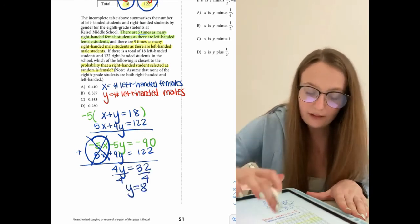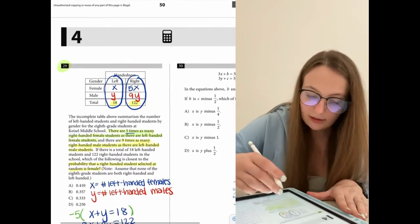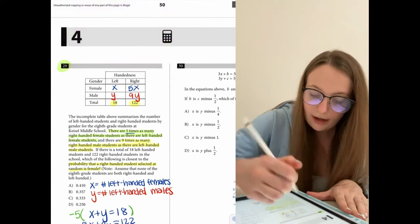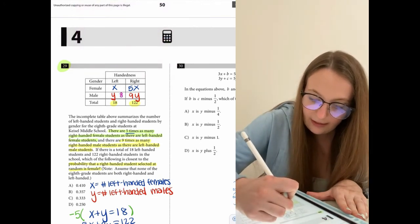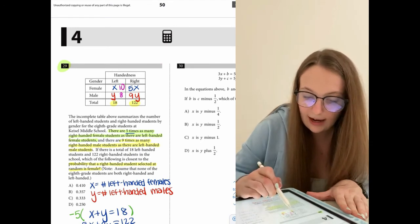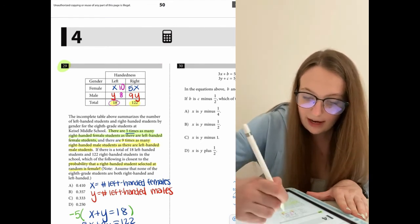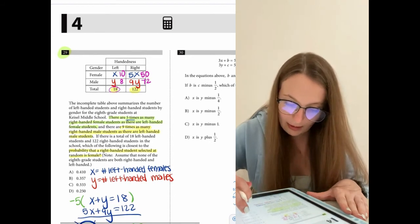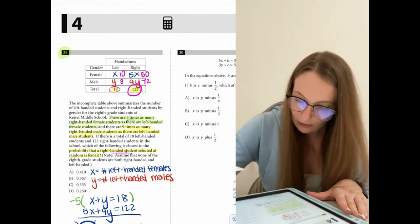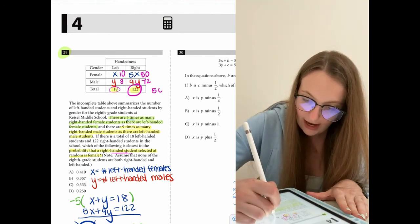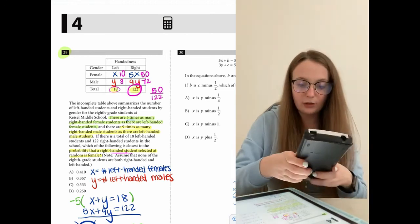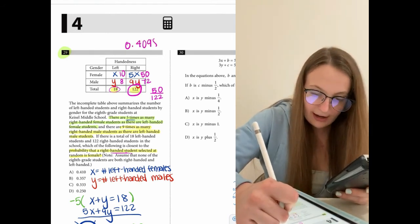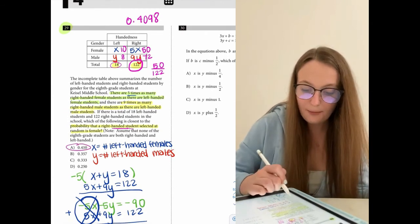So now we can go ahead and fill in the table. So we know then that Y is equal to eight. So Y is equal to eight. We're going to be in pink. That means that this is eight. And then the X has got to be 10 here, because we know then that 10 and eight has to sum to 18, five times 10 would be 50 and nine times eight would have to be 72. So they asked us the probability that a right-handed student selected at random would be a female. So that would be 50 out of the total of 122 right-handed students, which comes out to 0.4098, which we could see we'll round to choice A, 0.410.